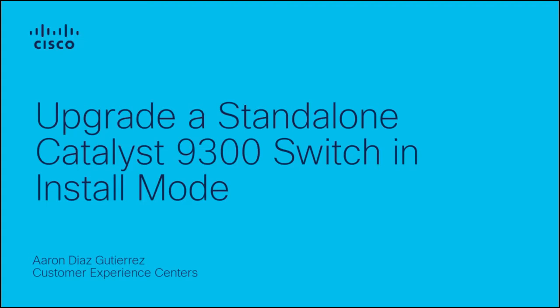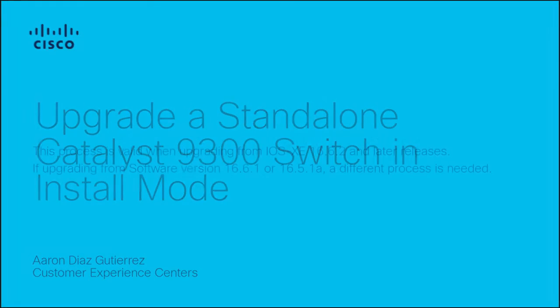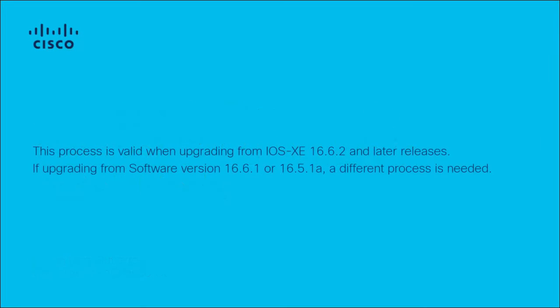Hello, this is Aaron from the Cisco TAC Enterprise Switching Team. In this video, I showcase the process to operate a standalone Catalyst 9300 switch in install mode. This process is valid when operating from IOS XC 16.6.2 and later releases. If operating from software version 16.6.1 or 16.5.1A, a different process is needed.